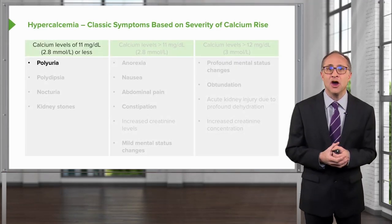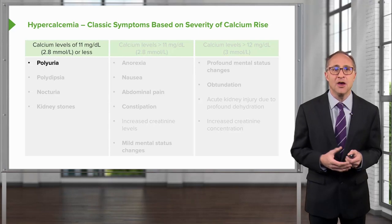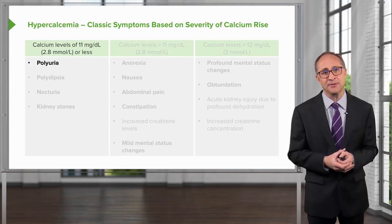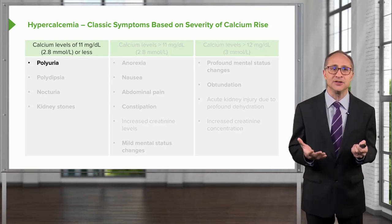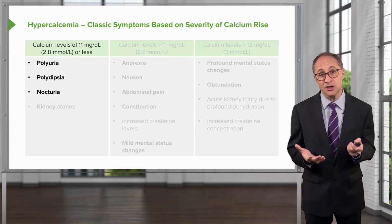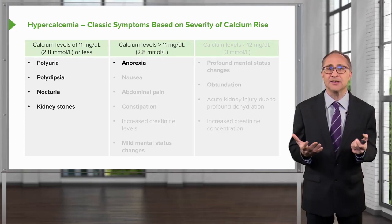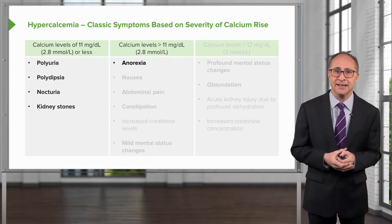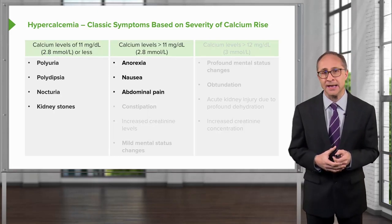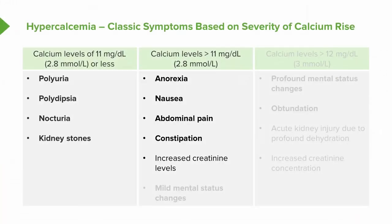Classic symptoms are based on the severity of calcium rise. Starting at around 11 mg per deciliter, one notices polyuria, polydipsia, nocturia (increased urination at night), and kidney stones. As calcium levels increase above 11, patients may manifest anorexia, nausea, abdominal pain, and constipation. There may also be renal effects — creatinine may rise because calcium elevations cause calcioresis, an increased diuresis that leads to a pre-renal state and rising creatinine levels.